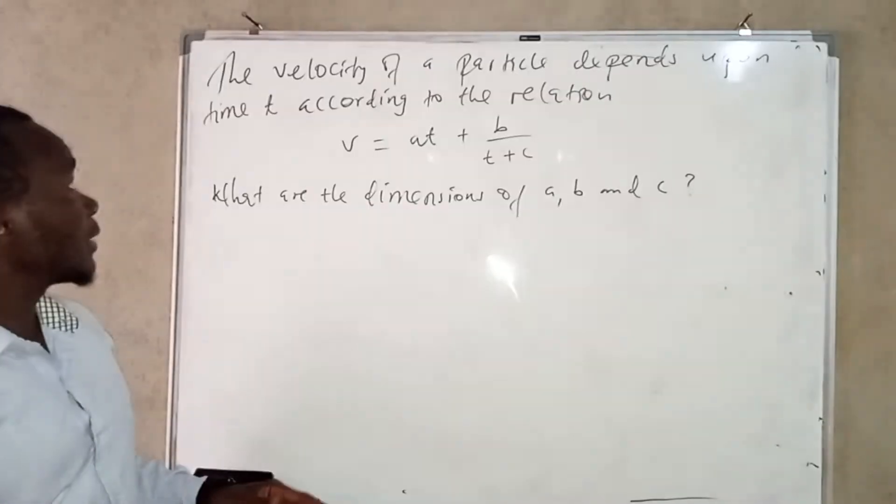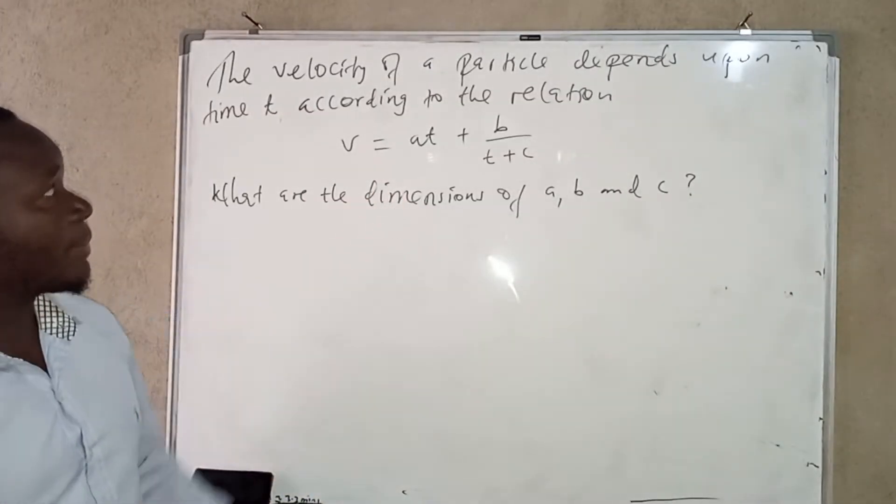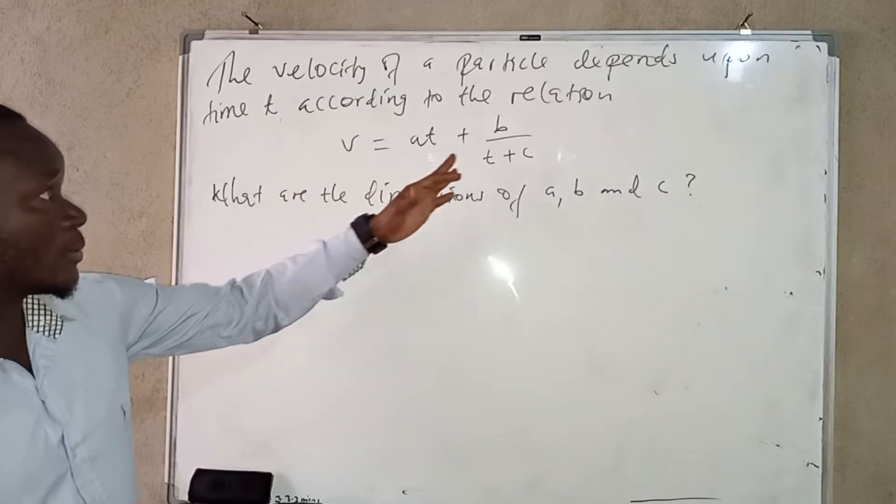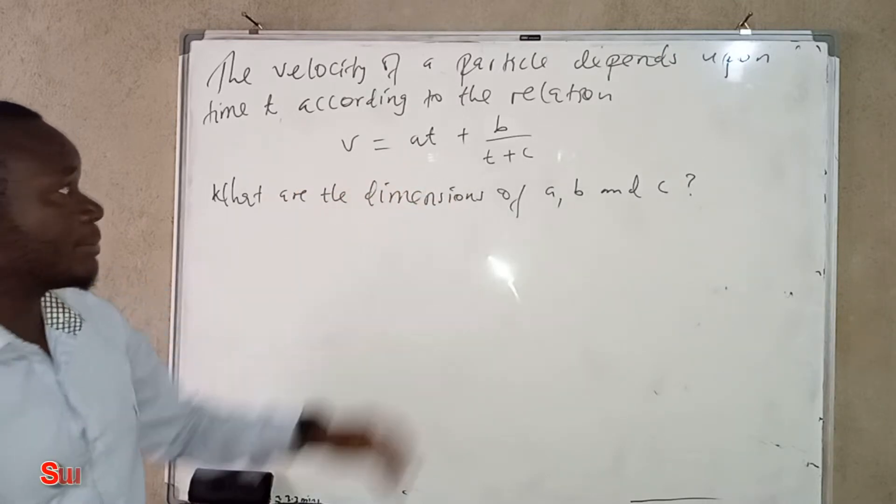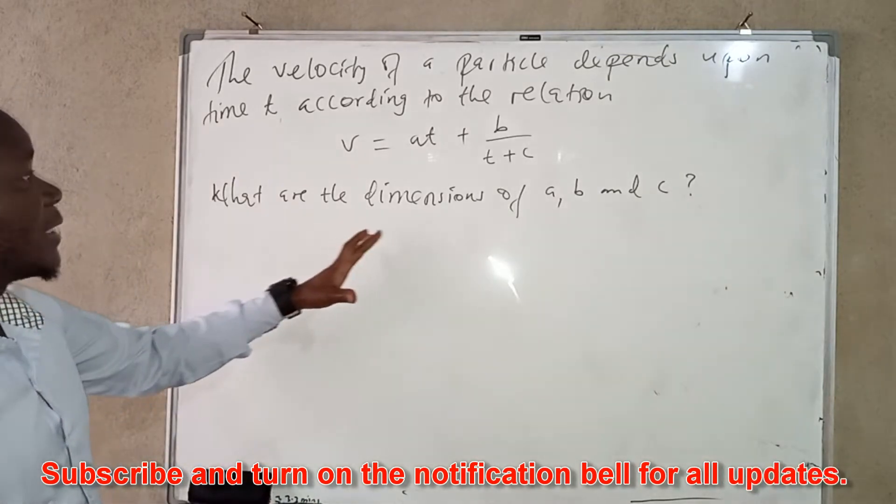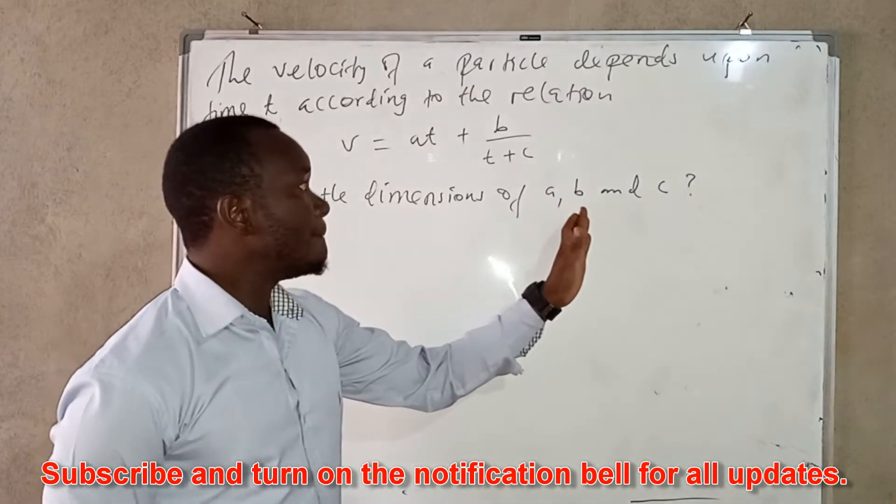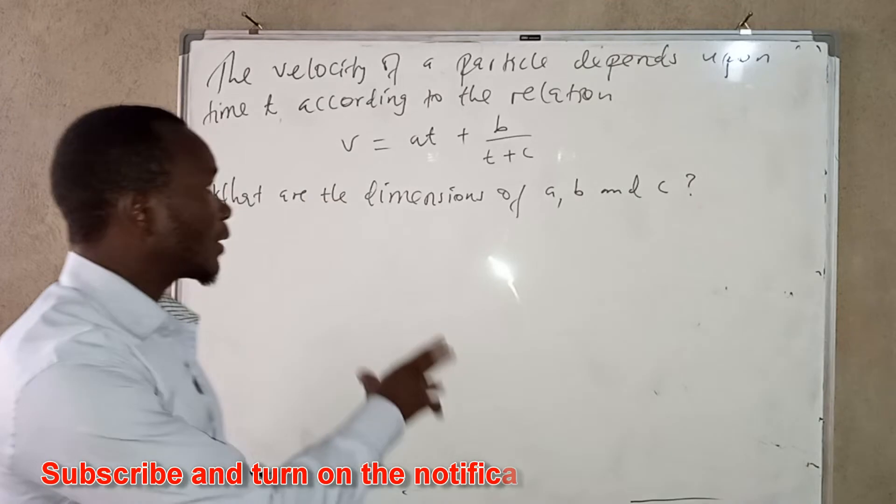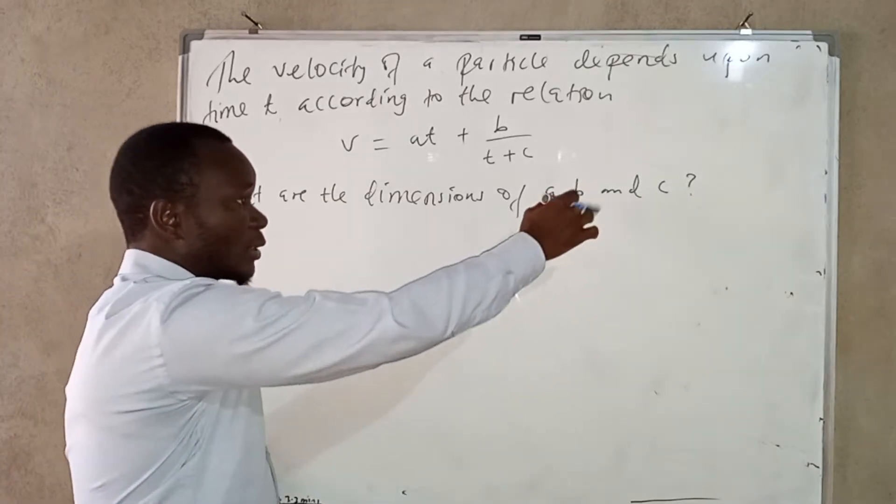In this video we are going to look at this question which says the velocity of a particle depends upon time t according to the relation v is equal to a t plus b over t plus c. What are the dimensions of a, b and c? So this is the question that we're going to look at, this is the one that we're going to answer in this video.